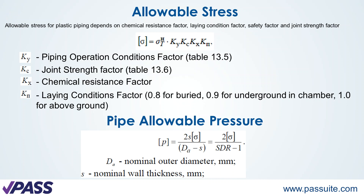The allowable stress is multiplied by several safety factors. The first factor is the piping operation conditions factor, the second is the joint strength factor, the third is the chemical resistance factor, and the fourth is the land condition factor. For example, it equals 0.8 for buried piping, 0.9 for underground piping in a chamber, and 1.0 for above-ground piping.